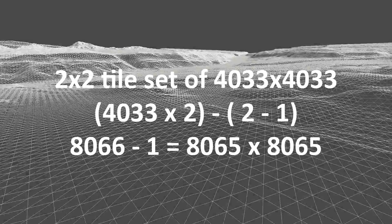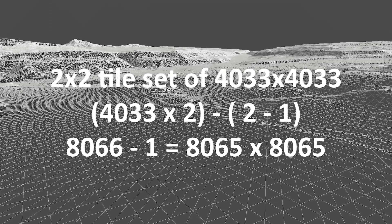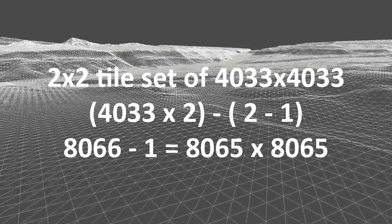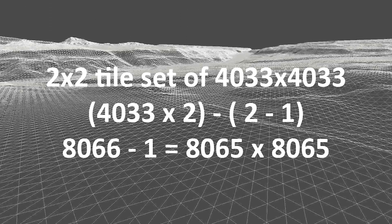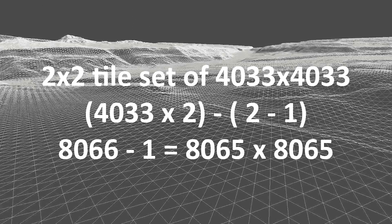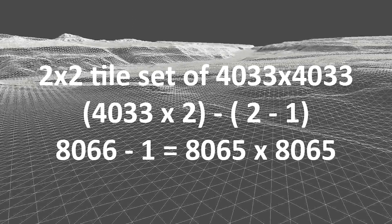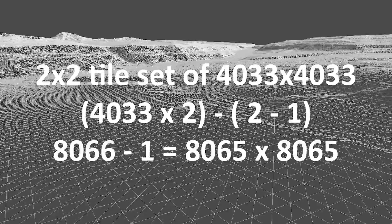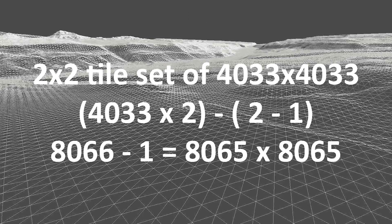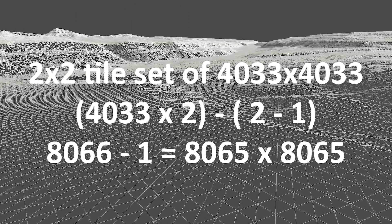So for a 2x2 tile set of 4033 by 4033, the main height map size you will need is 4033 times 2 minus 2 minus 1, or 8066 minus 1, which equals 8065 by 8065.